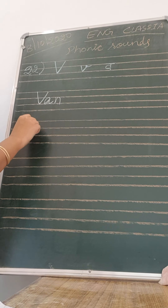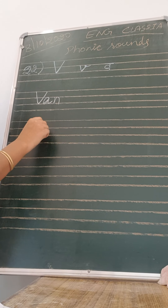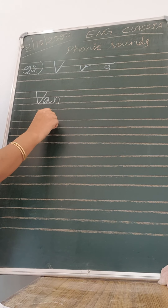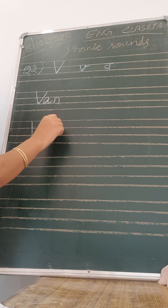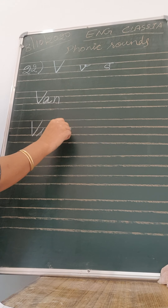V is for village — wah, wah, wah. V is for village — wah, wah, wah.